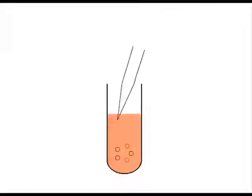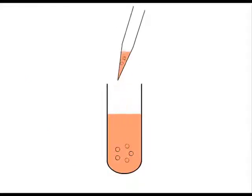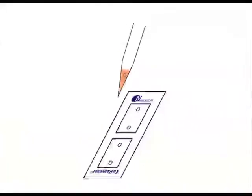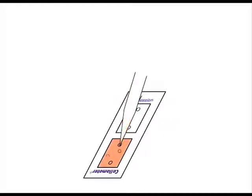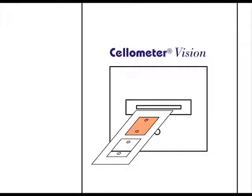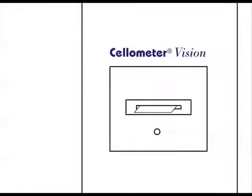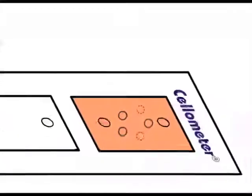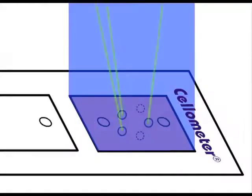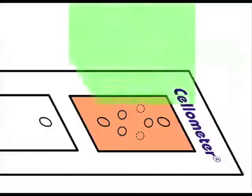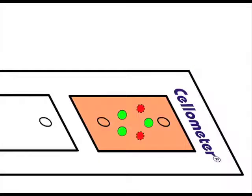To perform a cellometer AO-PI assay, load stained cells into a counting chamber. Insert the chamber into the cellometer. Cellometer automatically performs cell image acquisition and imaging analysis. Typical assay time is less than 60 seconds.